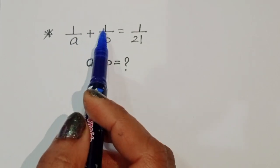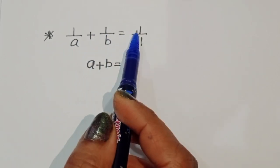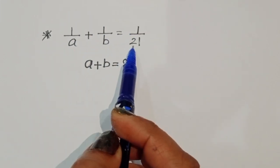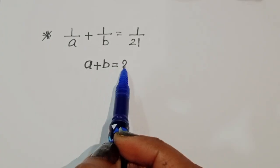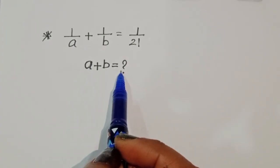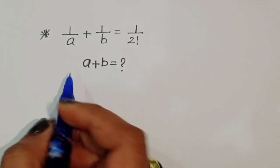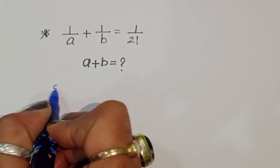1 upon a plus 1 upon b is equal to 1 upon 21. We have to find out the value of a plus b. Let's see the solution.